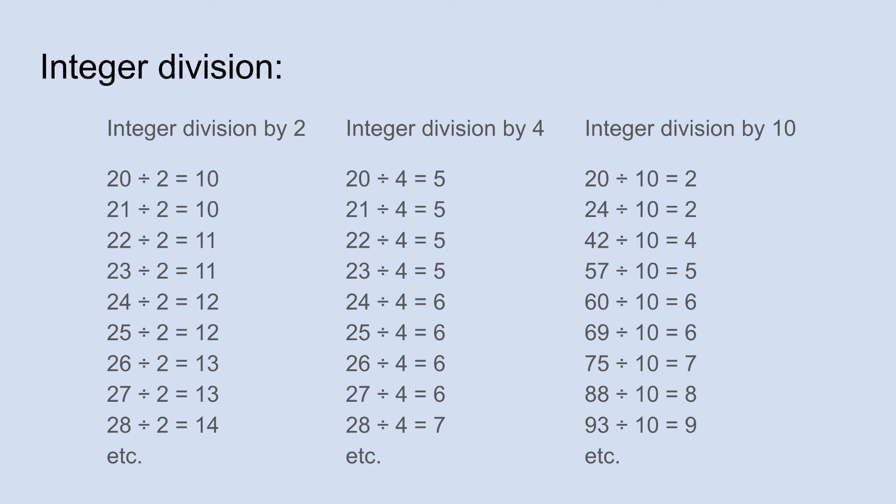Integer division by 10 in some ways is the easiest because we sort of live in a base 10 numeral system for the most part. So integer division by 10 basically just means ignore the units digit and only pay attention to the numbers that come before the units digit.